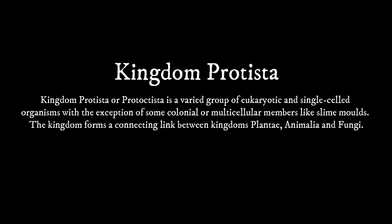Kingdom Protista is a group of single-celled organisms that have a nuclear membrane. Most organisms in Kingdom Protista are single-celled, but there are some exceptions — colonial and multicellular members are also present, which may or may not live in colonial organization.